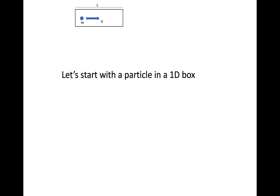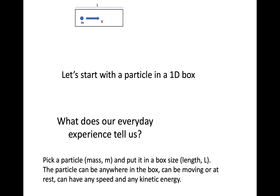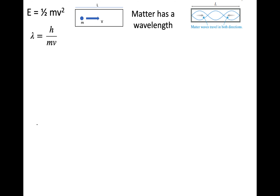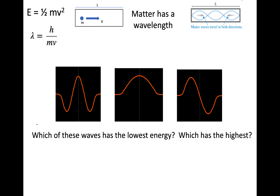Let's start with the particle in a 1D box. Everyday experience tells us we can pick a particle with a given mass M and put it in a certain size box of length L. Everyday experience tells me that particle could be anywhere in the box — it could be moving or at rest, it could have any speed, and any kinetic energy as it moves back and forth. One equation we'll be using is kinetic energy = ½mv². We're going to add to it now that matter has a wavelength, using our de Broglie equation. If we were to rank these waves by energy, longer wavelength is lower in energy.